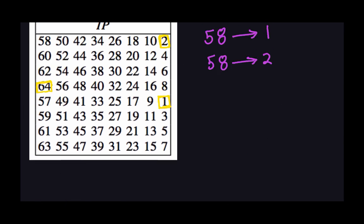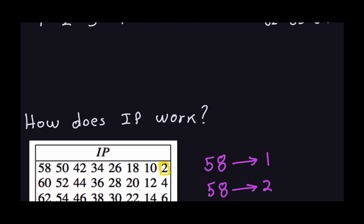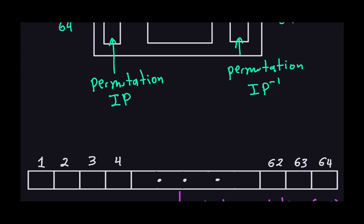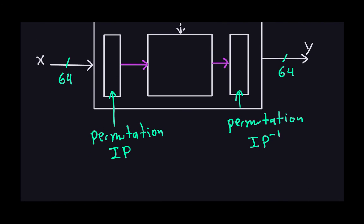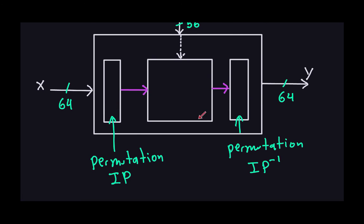So the initial permutation takes the 64-bit block and rearranges its zeros and ones into another 64-bit block. The result then goes through the inner encryption box. In the next video, I'll explain what happens with the final permutation, the IP inverse. See you in the next video.